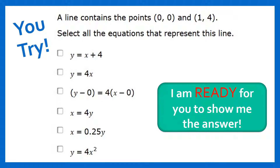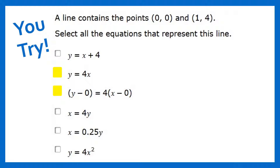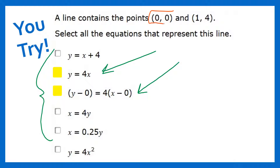Here's another one for you to try: a line contains the points (0, 0) and (1, 4). Select all the equations that represent this line. It might take some time — you may want to pause the screen and grab some scratch paper. When you're done, click the button to see the answers. Keep in mind that on the EOC there are multi-response questions, so there may be more than one answer. One strategy is to take the given points and plug them into each equation wherever you see x and y.